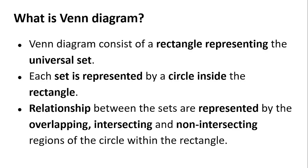To represent a Venn diagram, we draw a rectangle that represents the universal set — a set consisting of all the sets we are talking about, the entire universe of discourse. Inside this universe, each set is represented by a circle. The relationship between sets is represented by either overlapping two or more circles, intersecting them together, or having non-intersecting regions of the circles.